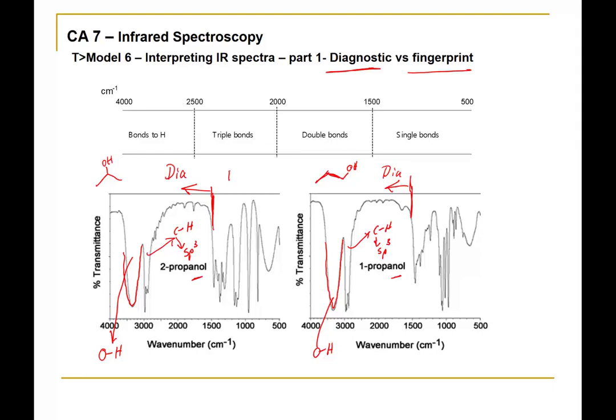The fingerprint region is found below 1,500 wave numbers. Sometimes we can pick out certain functional groups within it, but often that region of the spectrum is quite messy and it's hard to identify particular functional groups. However, if you suspect your molecule is 2-propanol and compare your spectrum to the literature spectrum, the fingerprint region must match exactly — it is very characteristic of that specific molecule. Every molecule will have a very unique fingerprint region.